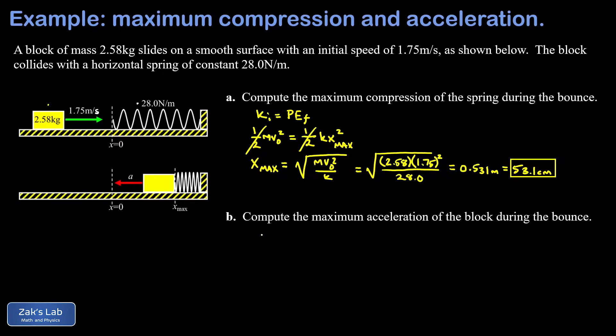We calculate the force exerted by the spring using Hooke's law. I don't need to worry about the minus sign. I'm just finding the magnitude of the force right now, so F equals kx. I have the spring constant as 28.0 and then the max compression of the spring in meters, 0.531, and I get 14.87 newtons for the maximum force experienced by the block.